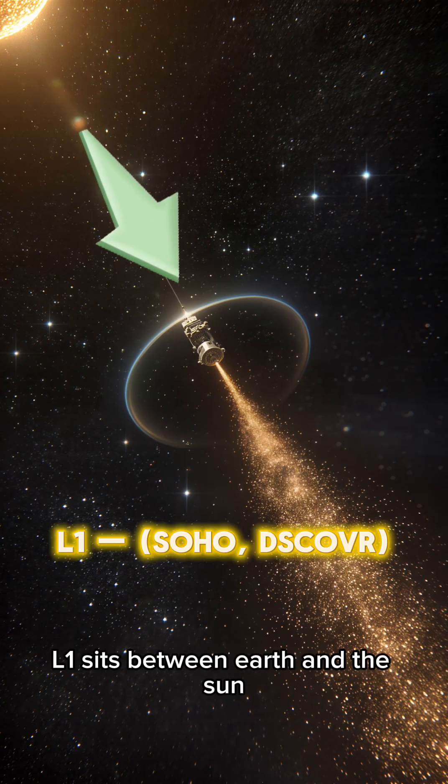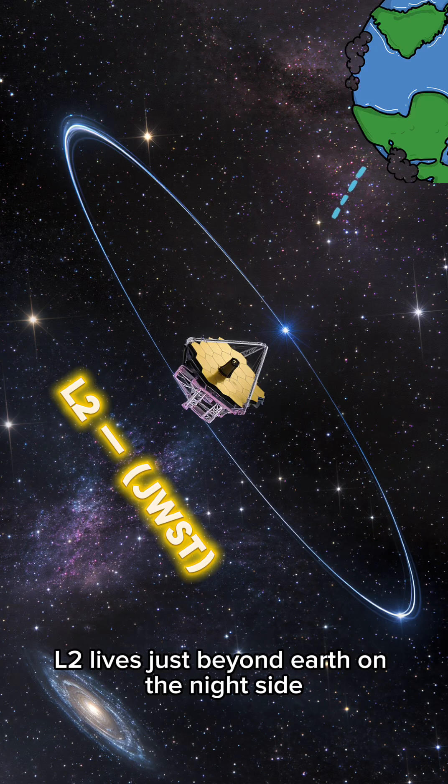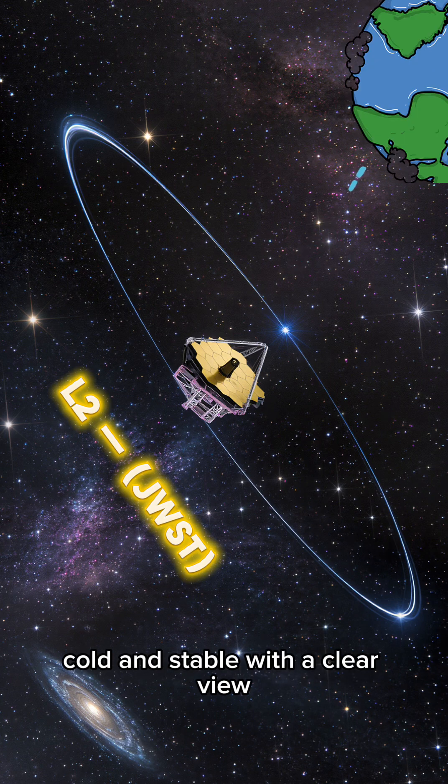L1 sits between Earth and the Sun and is perfect for solar weather watchers. L2 lives just beyond Earth on the nightside, and that is where JWST sits, cold and stable with a clear view.